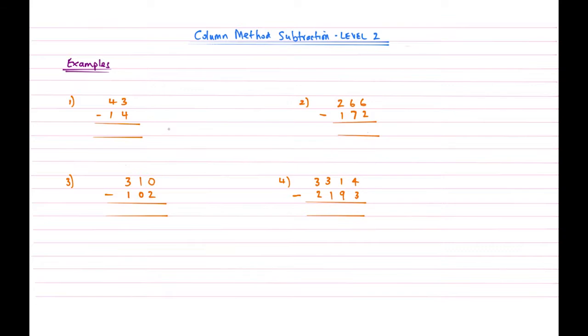So this is Level 2, and this is introducing the concept of borrowing and compensating, and it's all to do with the fact that in certain columns, the top number will be smaller than the bottom.